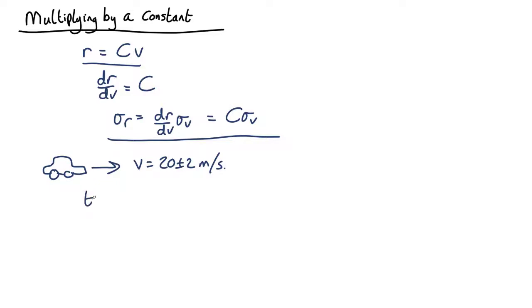How far does it go in 10 seconds? Now we're going to assume that there's no uncertainty in the time—it's very precisely known—so we're only looking at the uncertainty in the velocity.